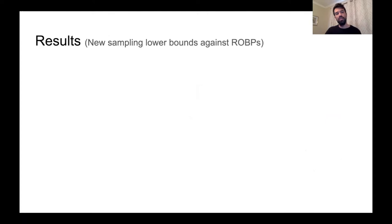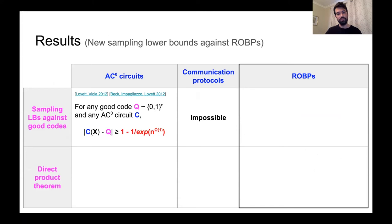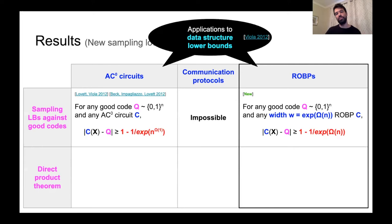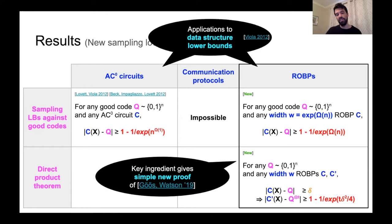To summarize: our main results are sampling lower bounds against good codes and a direct product theorem. Previously, sampling lower bounds against good codes were known for AC0 circuits, and it is known that communication protocols can easily sample good codes. Our first main result shows ROBPs have a very hard time sampling good codes, and using a connection by Viola, we obtained data structure lower bounds for storing code words. Nothing was known for any computational model for the direct product theorem for sampling; our second main result establishes this for ROBPs. Along the way, one of our key ingredients gives a simple new proof of results by Boos and Watson for sampling disjoint sets using communication protocols.